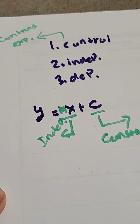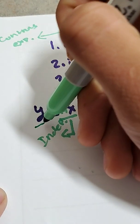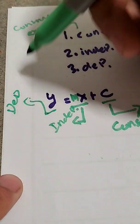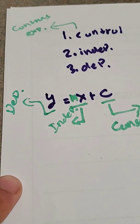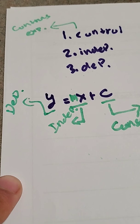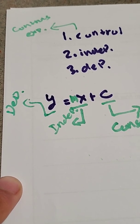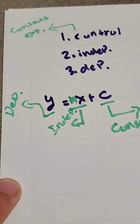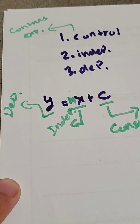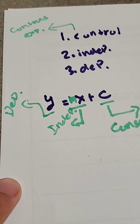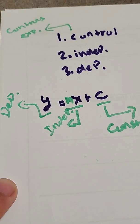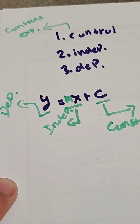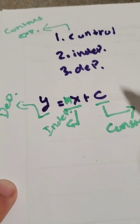That leaves the dependent variable, which is y. The dependent variable depends on both the control variable and the independent variable. Not every experiment or equation will have a control variable, but the dependent variable heavily relies on the independent variable to exist. In y = mx + c, the value of y depends on mx, and because there is a constant, it also relies on that.